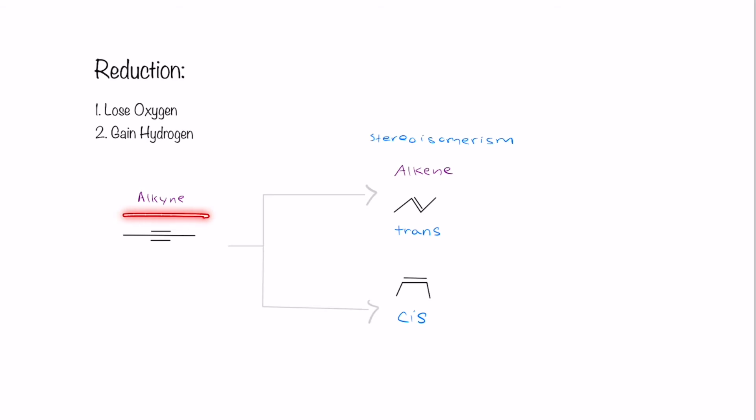To reduce an alkyne to a trans alkene, we would use something called NaNH3 liquid. This over here is a cursive L that indicates that the NH3 is going to be in a liquid state, which is pretty important. And so this would turn our alkyne into a trans alkene.